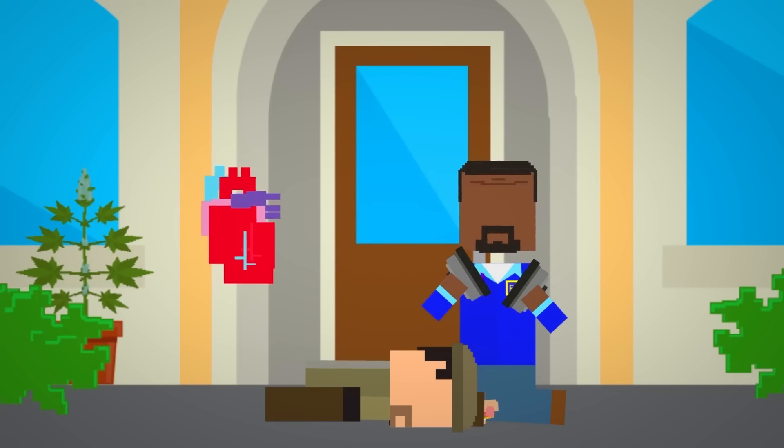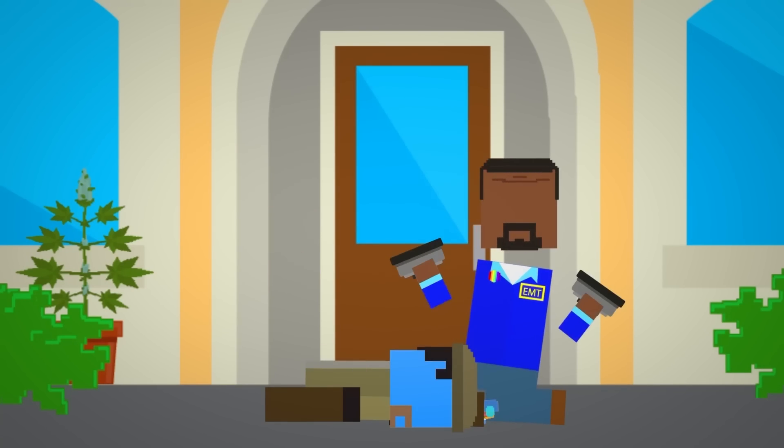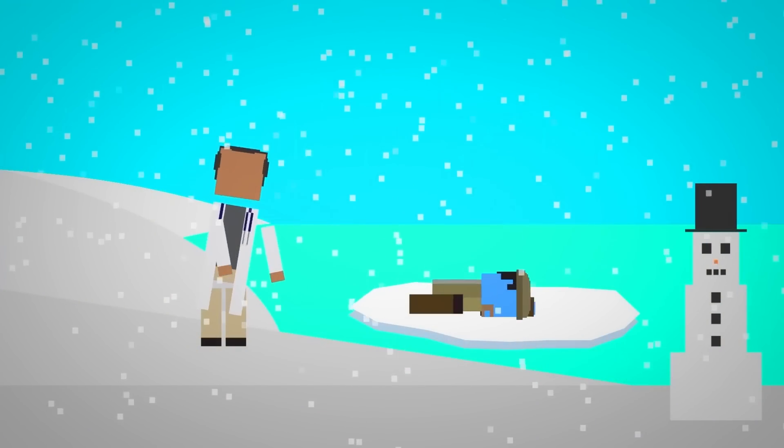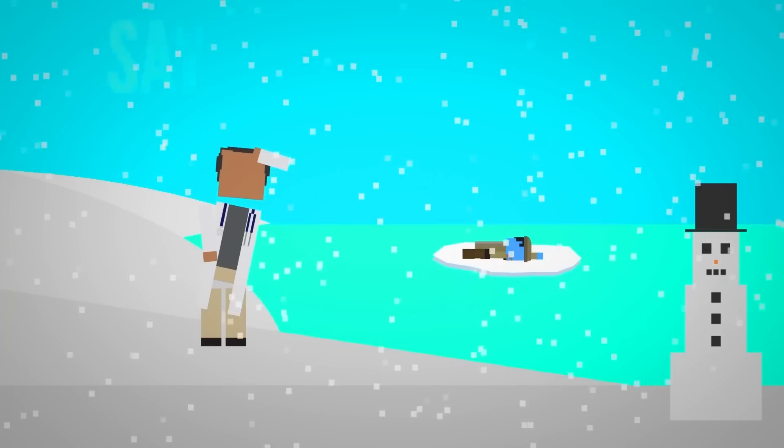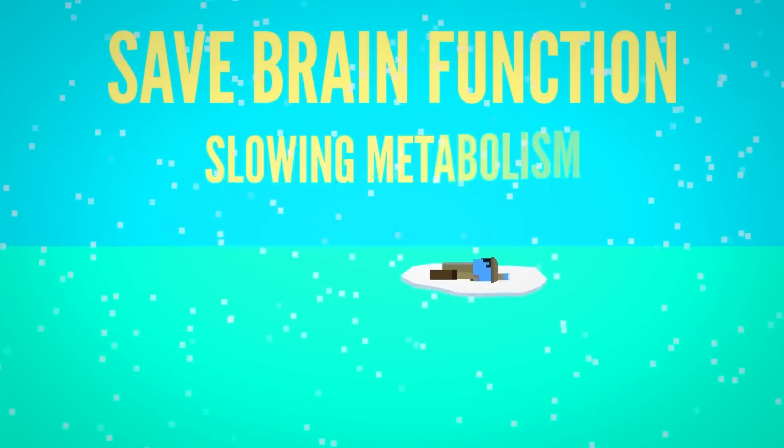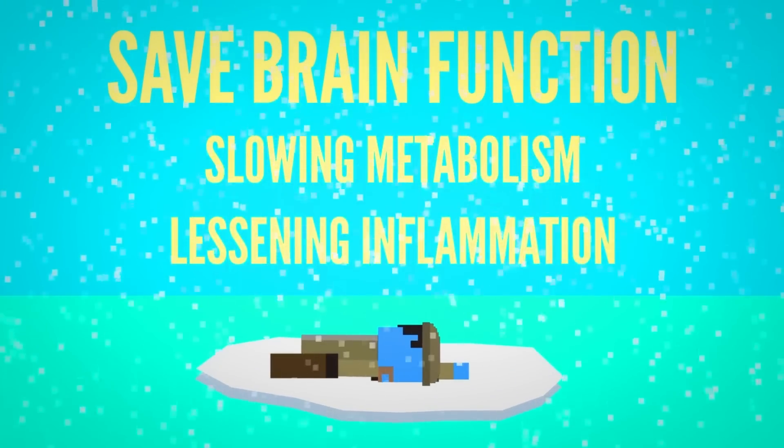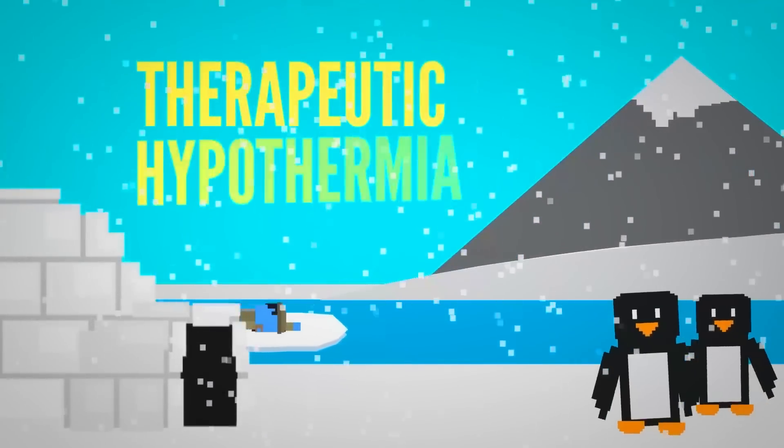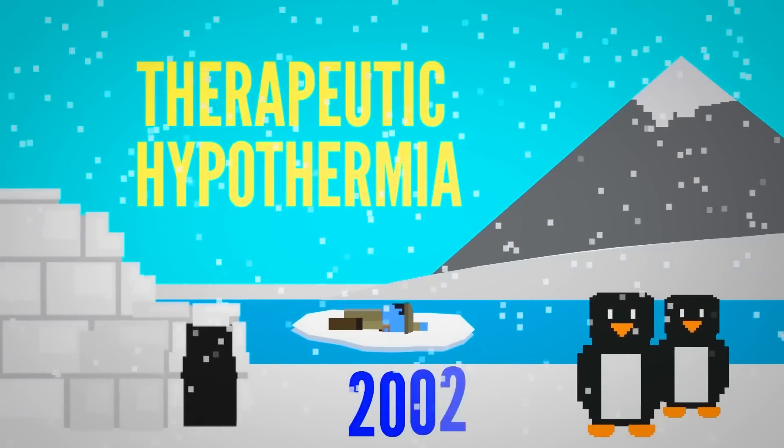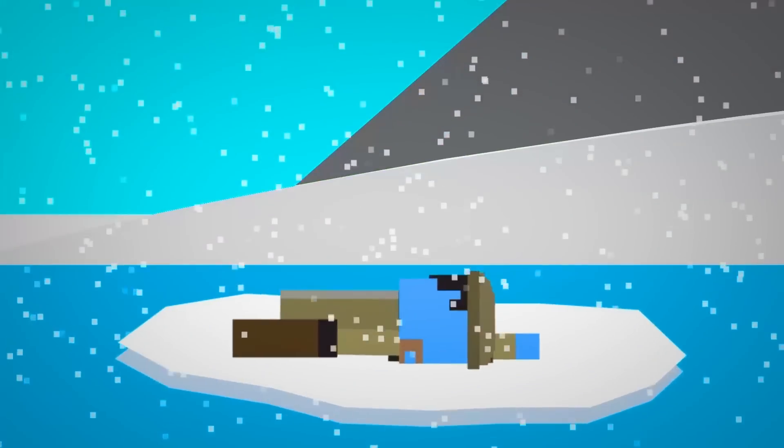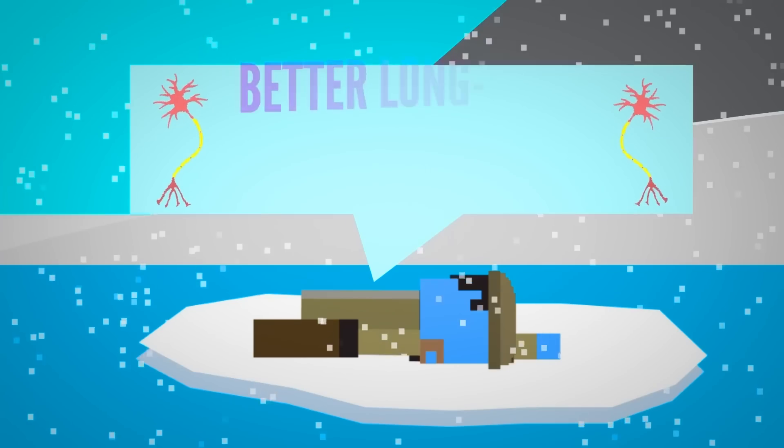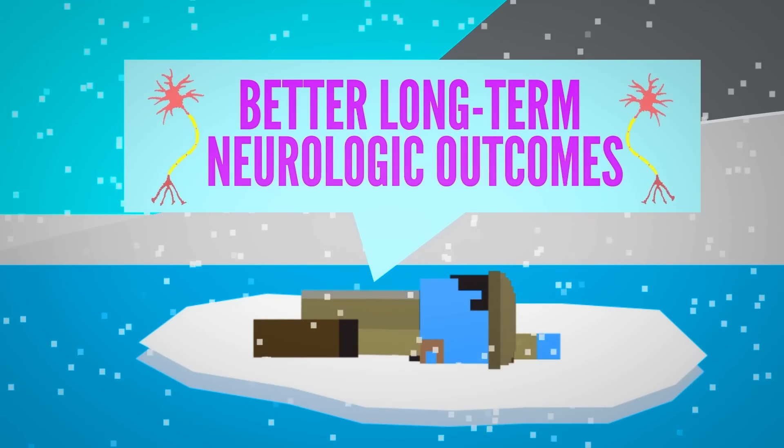Even when someone's heart is restarted, they may still not regain consciousness. In these cases, doctors may lower body temperature in an attempt to save brain function by slowing metabolism and lessening inflammation. This is called therapeutic hypothermia and was introduced in 2002 after studies showed that the procedure led to significantly better long-term neurological outcomes.